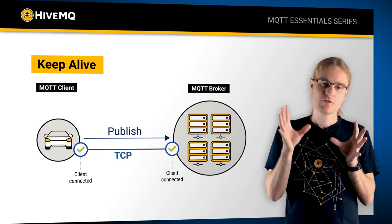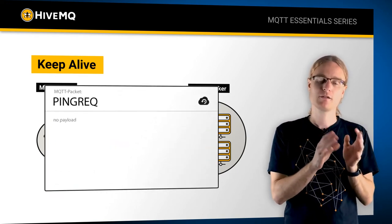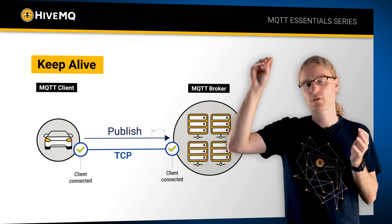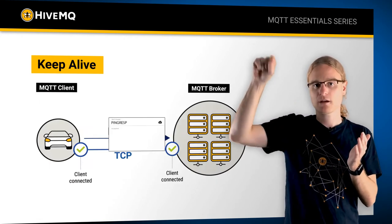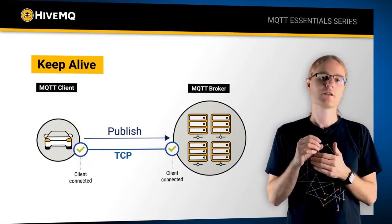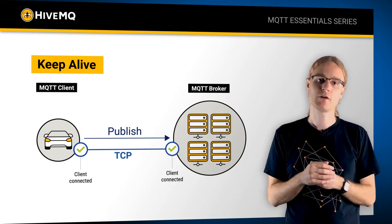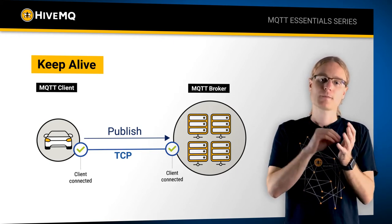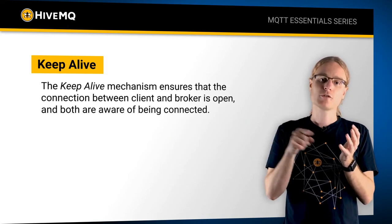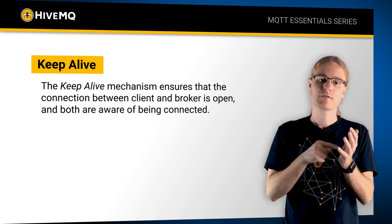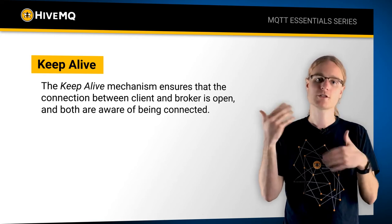What MQTT uses here is a so-called PINGREQ packet, which is a ping, and the broker answers with a PINGRESP packet, which is a ping response. So this is really ping and pong. This is done by the MQTT client usually under the hood, so the application programmer doesn't have to care about this themselves — the MQTT library handles it. So even if no data flows, the broker and the client still exchange these packets, and both participants know that the connection is still valid.